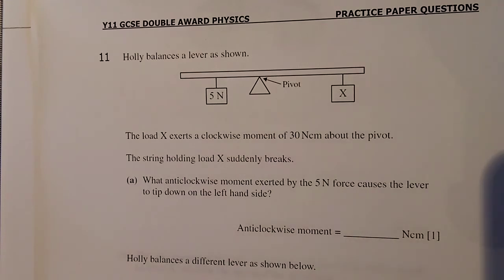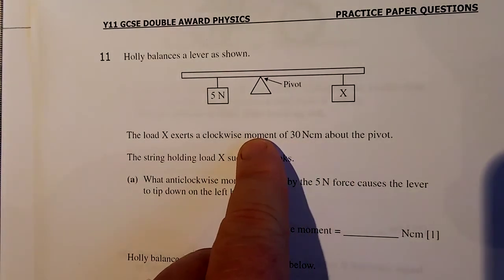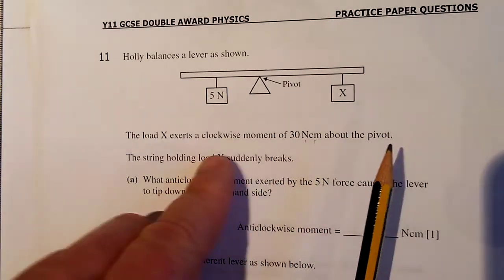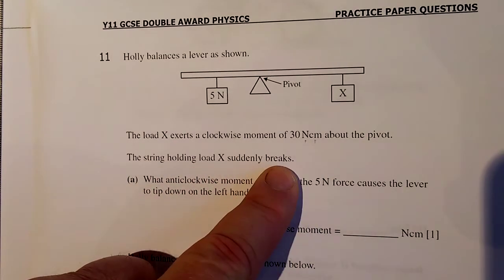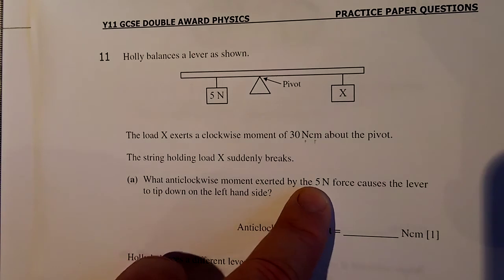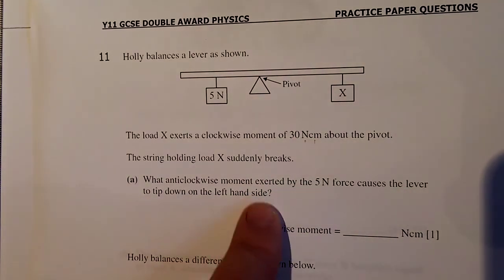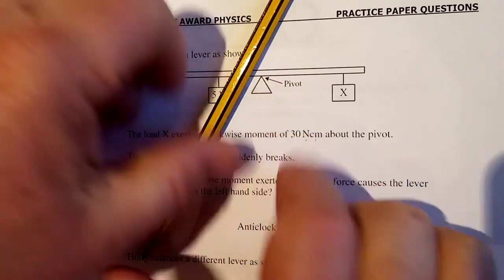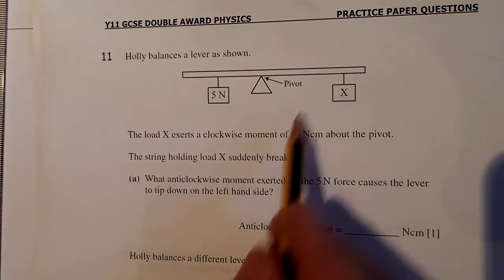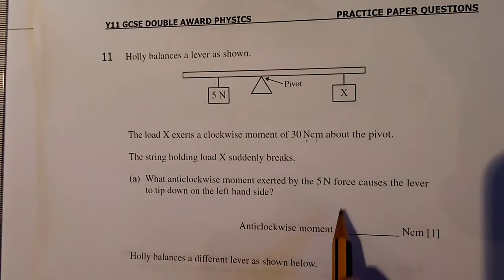Holly bounces. A lever is shown. So the load X exerts a clockwise moment of 30 newton centimeters. Newton centimeters moment. Force. Force times distance about the pivot. Where's that X? There's it there. The string holding the load X suddenly breaks. What anti-clockwise moment exerted by the 5 newton causes the lever to tip down on the left hand side? Well, it was balanced. The clockwise moment is equal to the anti-clockwise moment. Right? So it had 30 centimeters. So it was balanced. If it was balanced, the two moments are the same. So it must have been 30 newton centimeters.